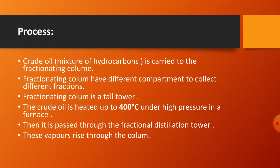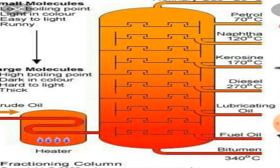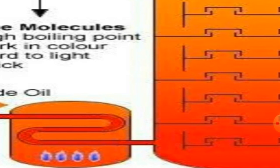Each compartment of the fractionating column has a specific temperature. The crude oil is heated up to 400 degrees Centigrade under high pressure in a furnace, then transferred to the fractionating column. The vapors rise through the column. Hydrocarbons with lower boiling points evaporate quickly and rise to the top of the tower. You can see the furnace in the diagram where the crude oil is heated at 400 degrees Centigrade.